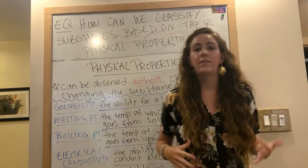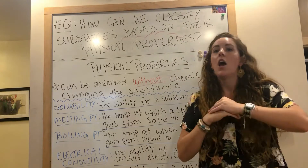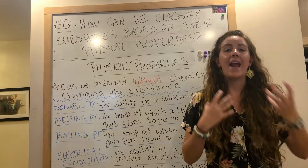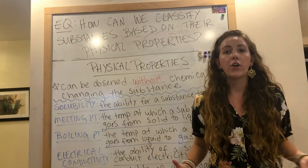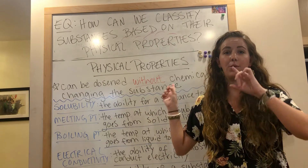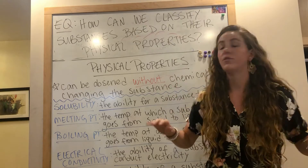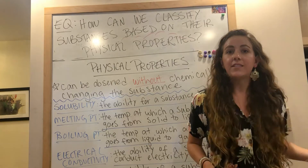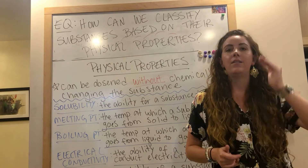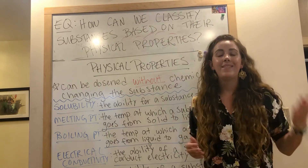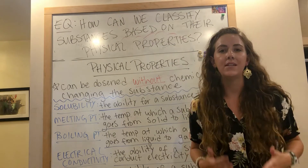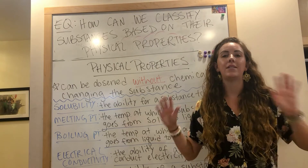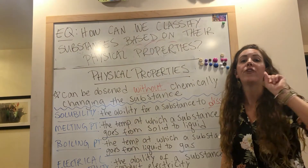Some examples are mass — you can measure the mass of an object without changing it in any way. There are a bunch of other physical properties we are going to talk about today that can all be measured or observed without chemically changing the substance. We might change the state of substances from solid to liquid, liquid to gas, or dissolve them, but at the end of the day they are still the exact same substance, just in a different state.